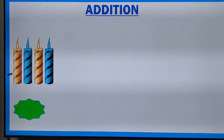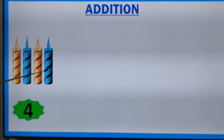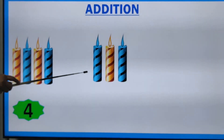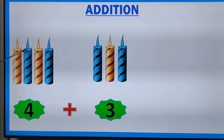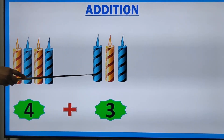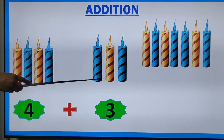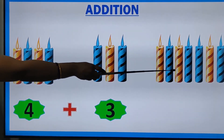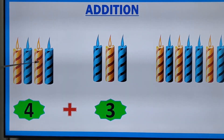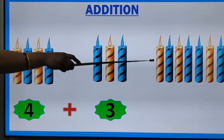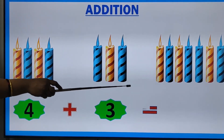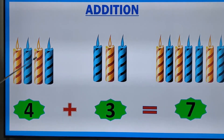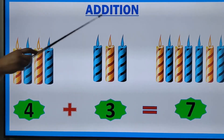Now how many candles are there? One, two, three, four. Four plus three candles. Four candles plus three candles together — how many candles? One, two, three, four, five, six, seven. Four candles plus three candles together — seven candles. Four plus three is equal to seven.